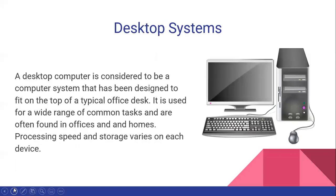Now we move to desktop systems. A desktop computer is considered to be a computer system that has been designed to fit on the top of a typical office desk. It is used for a wide range of common tasks and can be found in schools, homes, and offices. Their processing speed, memory, and storage capacity varies but are installed on the device. As you can see with the picture, the desktop computer comes with the system unit, the monitor, the keyboard, and the mouse.